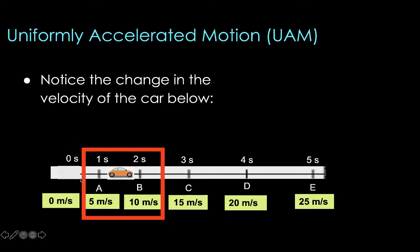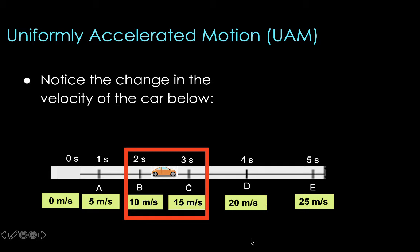From point A to point B, the car's motion changes from five meters per second to ten meters per second, meaning it speeds up by five meters per second within one second — because ten minus five is five. Going forward from point B to point C, it speeds up from 10 to 15 meters per second, so that's another five meters per second gain within a one-second time interval.